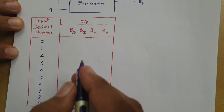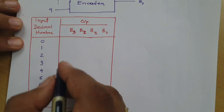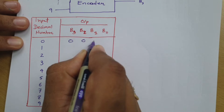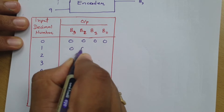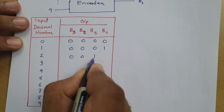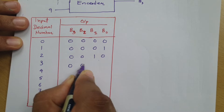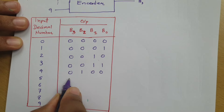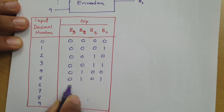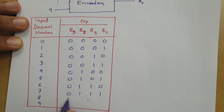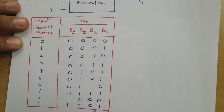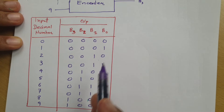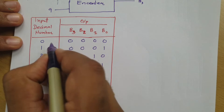With respect to each decimal number, the corresponding BCD binary data is: 0 → 0000, 1 → 0001, 2 → 0010, 3 → 0011, 4 → 0100, 5 → 0101, 6 → 0110, 7 → 0111, 8 → 1000, 9 → 1001. This is the BCD binary data.